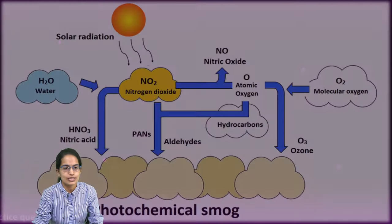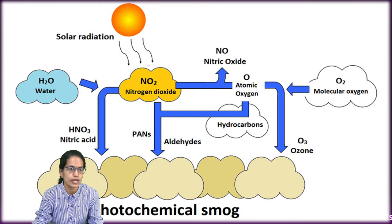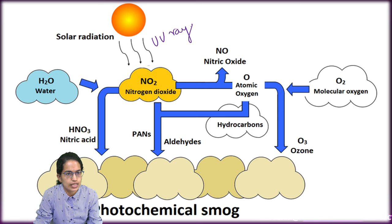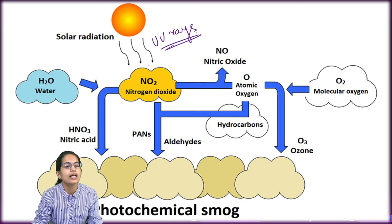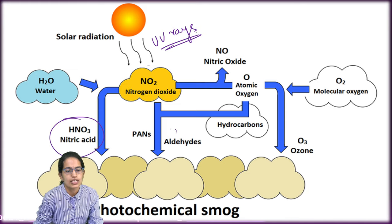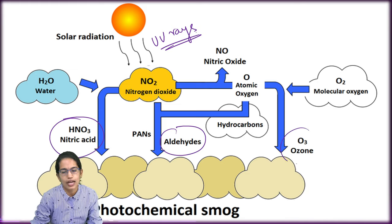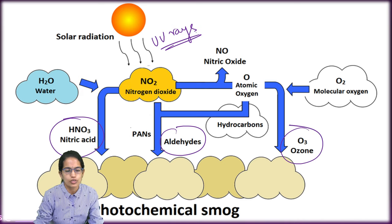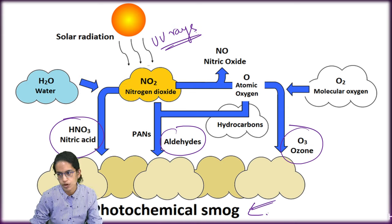How the things react here is very important. Solar radiation or UV rays react with nitrogen oxide and water, and three important things are formed: nitric acid, panaldehydes, and ozone. All of those are responsible for photochemical smog.